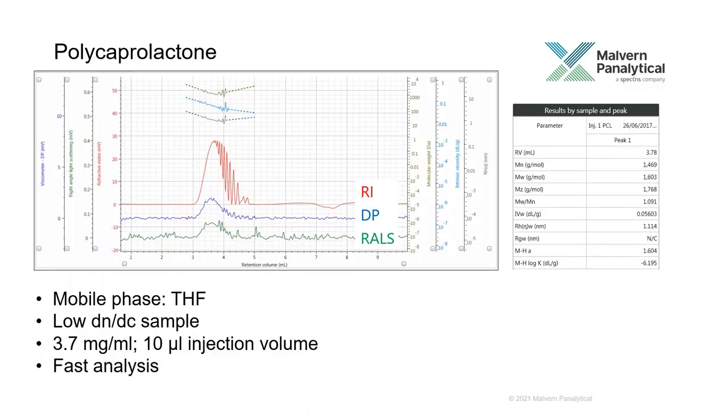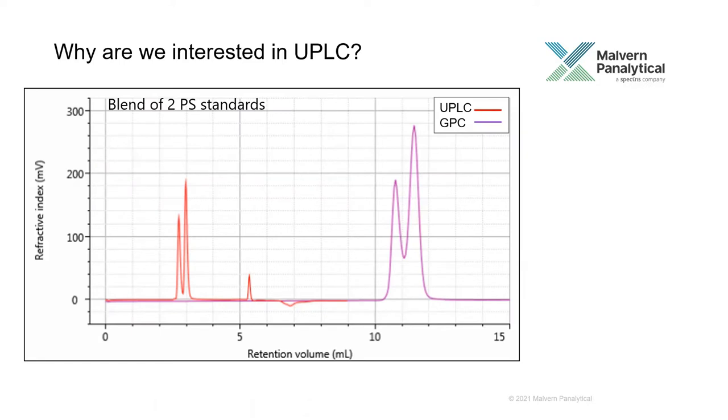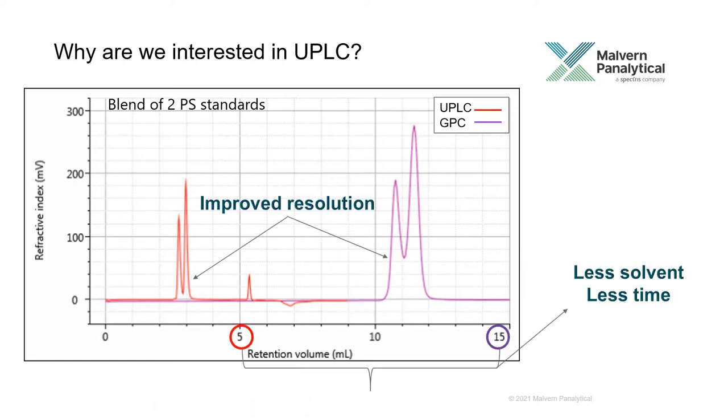The Omniset reveal brings the powerful insight of the multi-detection technique to the benefit of the APC, such as the increased resolution, the reduction of the runtime, the reduction of the consumption of the sample and the solvent.